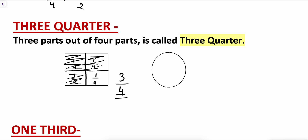Let's do it for the circle. This one, two, and three portions will be written as three portions out of four parts — three by four. So this is the three-quarter.